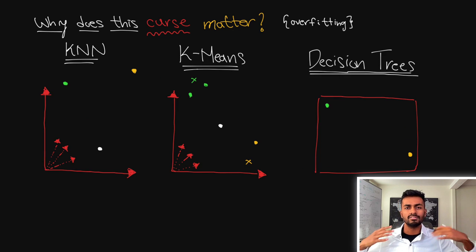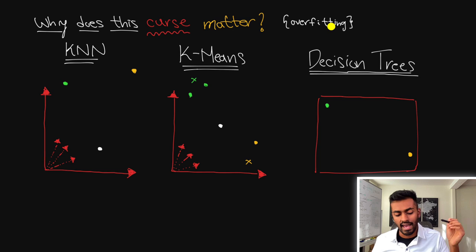Now that we've understood what the curse of dimensionality is and how it occurs, why does this curse even matter at all? The curse of dimensionality causes overfitting and this can affect different models in varying degrees. The models that are most affected are k-nearest neighbors, k-means, and decision trees. A lot of this has to do with the fact that they are heavily dependent on distance metrics and distances between individual data points.